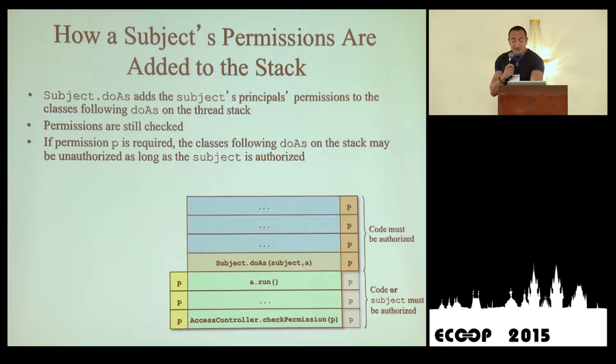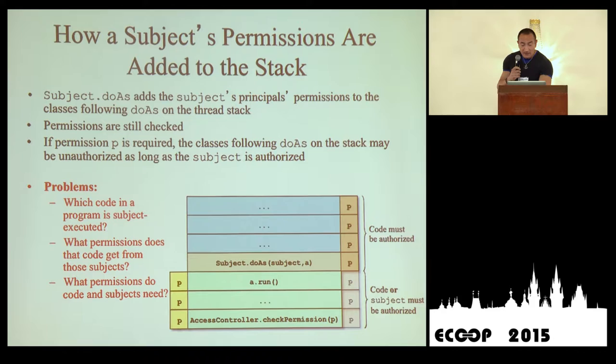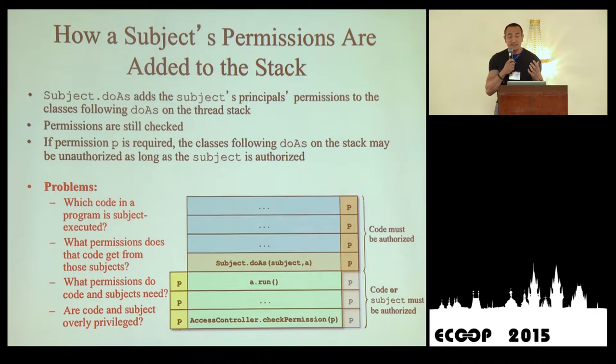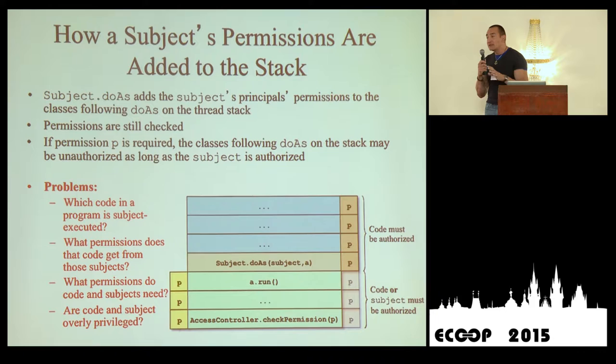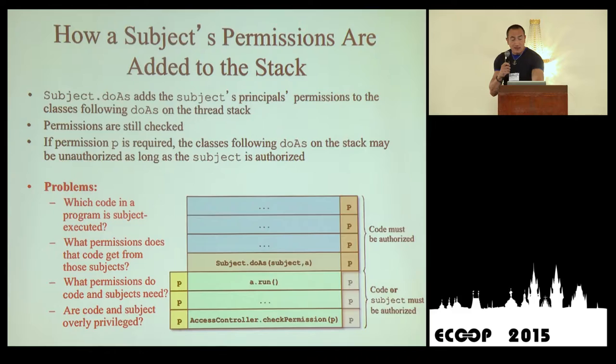It's actually very important to answer two key questions. First, we need to understand which code is executed under the authority of which subjects. Second, given that we can grant permissions to both subjects and code, we want to avoid redundancy — a situation in which both the subject and the code are granted the same permissions. The granting of permissions must be minimal; otherwise, we violate the principle of least privilege.